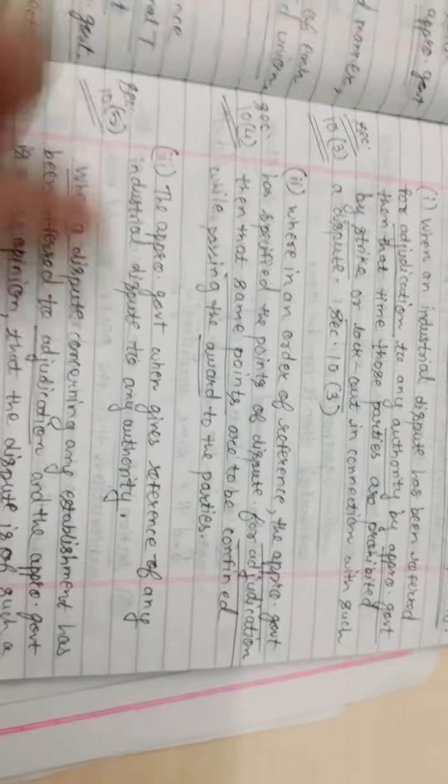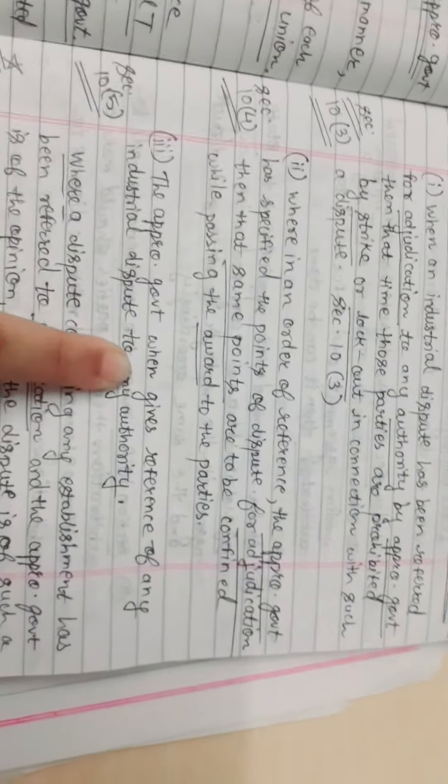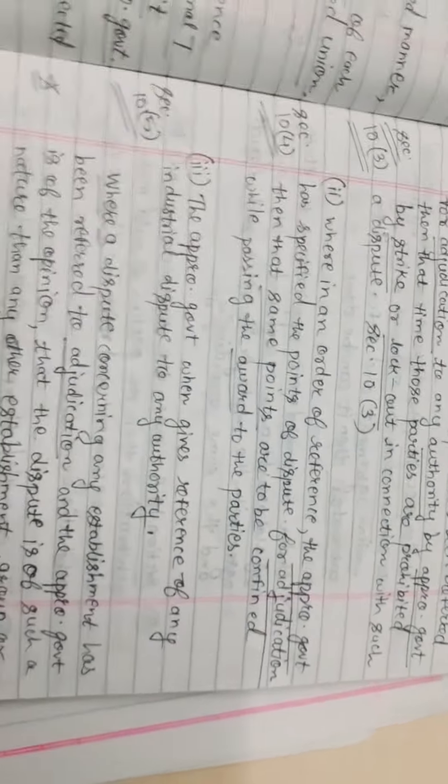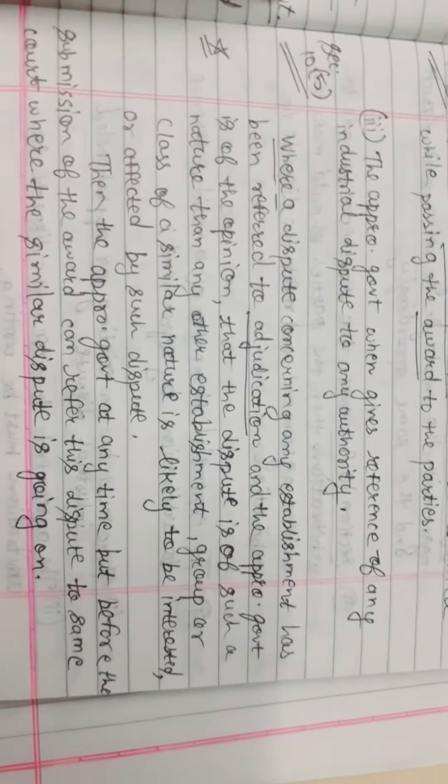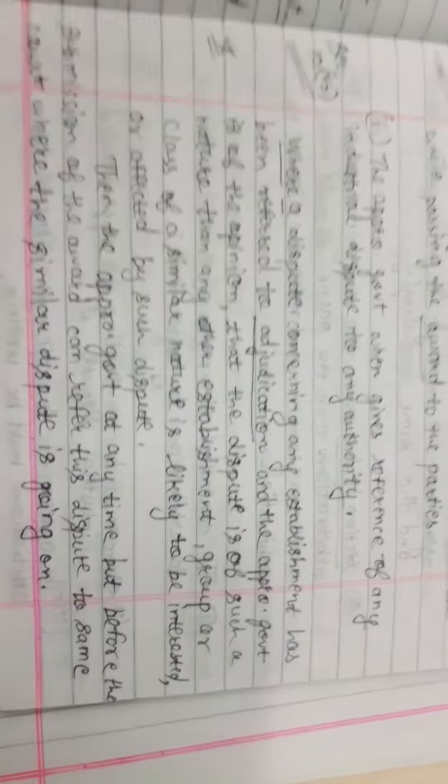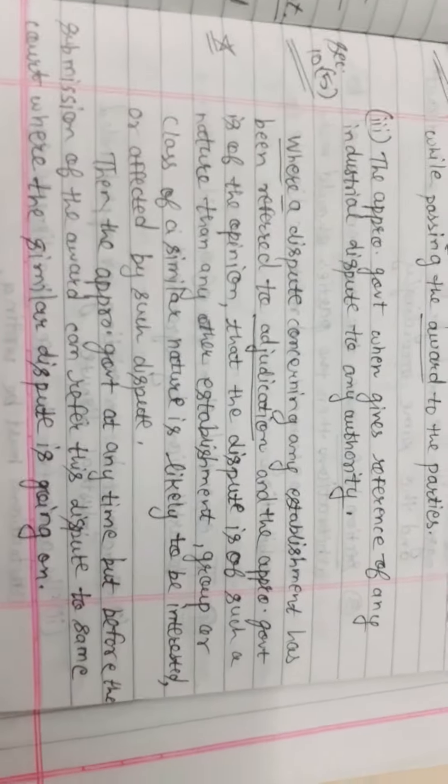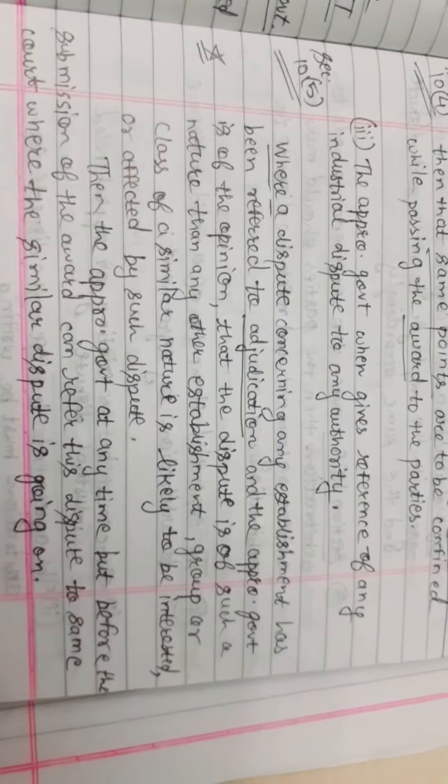Section 10 Clause 5: When appropriate government gives reference of any industrial dispute to any authority, where a dispute concerning any establishment has been referred to adjudication and the appropriate government is of the opinion that the dispute is of such nature,